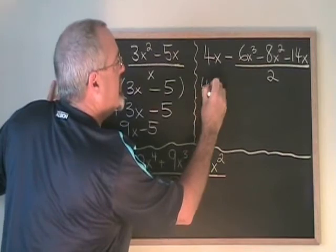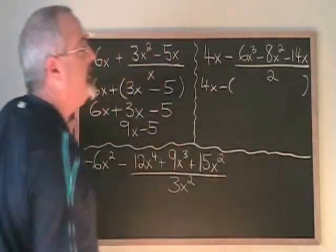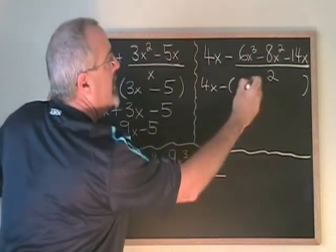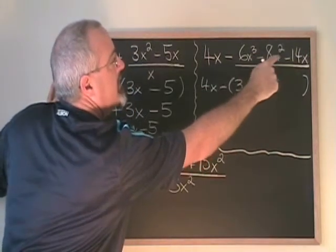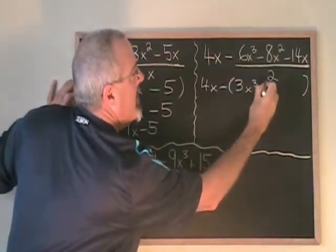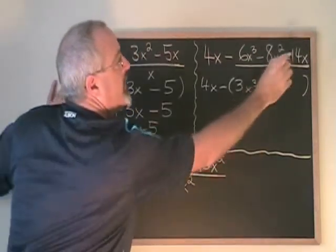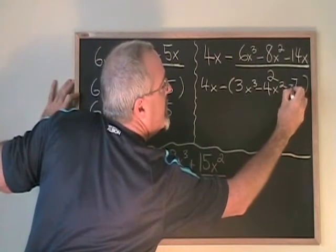I put 4x minus, and then I put a bracket big enough to contain the answer to the division. 6x cubed divided by 2 is 3x cubed. Minus 8x squared divided by 2 is minus 4x squared. Minus 14x divided by 2 is minus 7x.